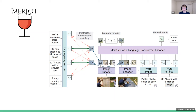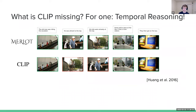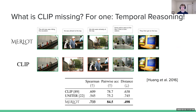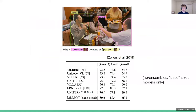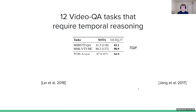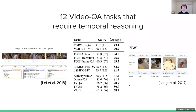Merlot actually orders this particular instance correctly. And it wasn't just this one instance — in general, Merlot was outperforming prior work on this zero-shot ordering task. It also wasn't just doing this in a zero-shot way: the fine-tuned results for Merlot on the VCR task were state-of-the-art per base size model at the time. We also applied it to 12 other tasks that presumably require temporal reasoning, and at the time Merlot really pushed the state-of-the-art for all of these.